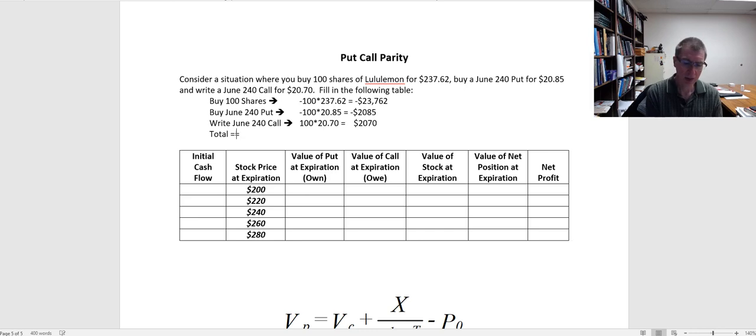That is going to give me a total value of my position of $23,762 out minus $2,085 plus $2,070. So my net cash flow is going to be a cash outflow of $23,777 when I establish this position. So let me go ahead and put that in my initial cash flow. It's going to be the same regardless of what the price closes at.